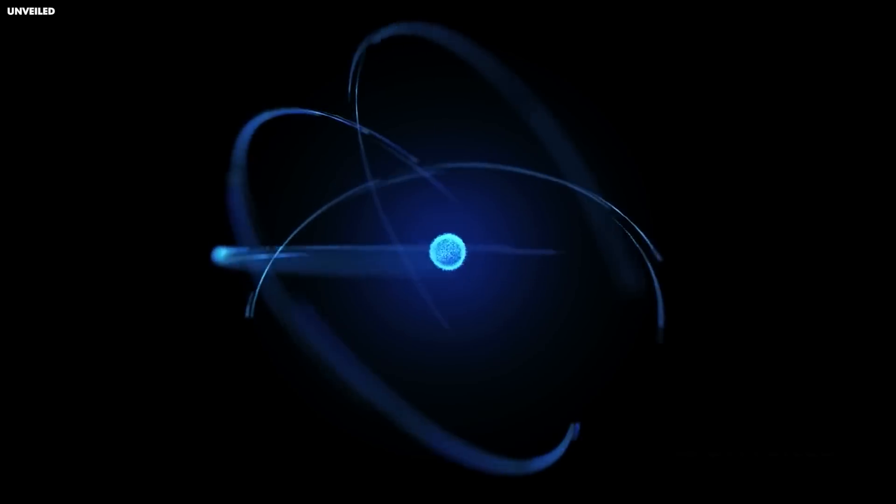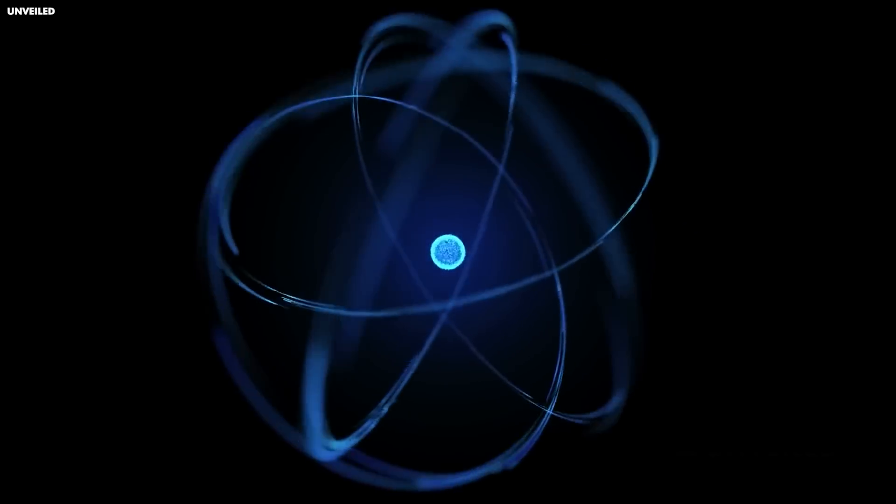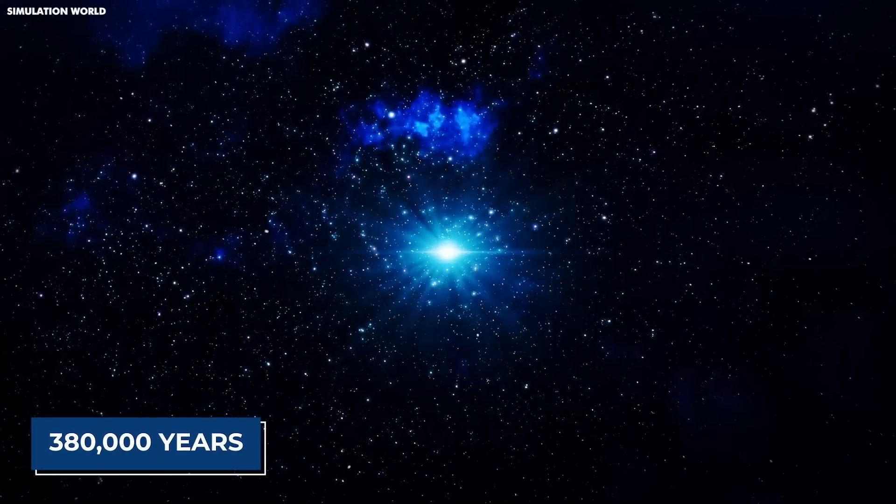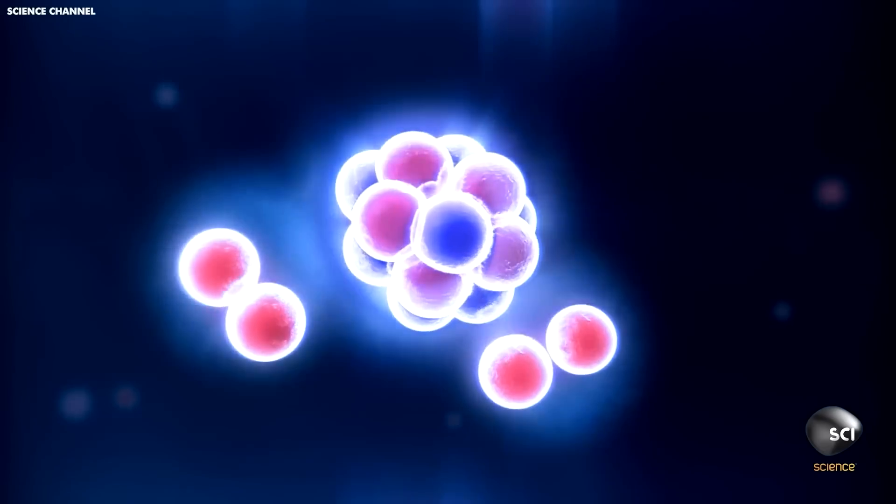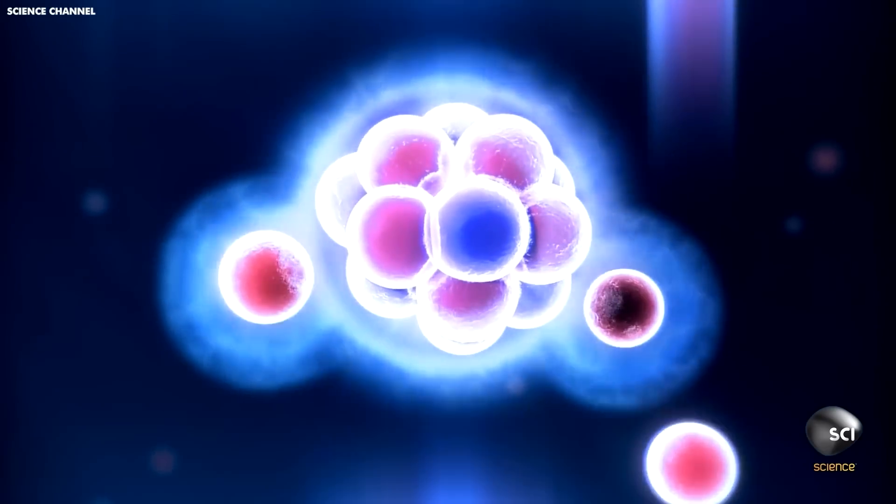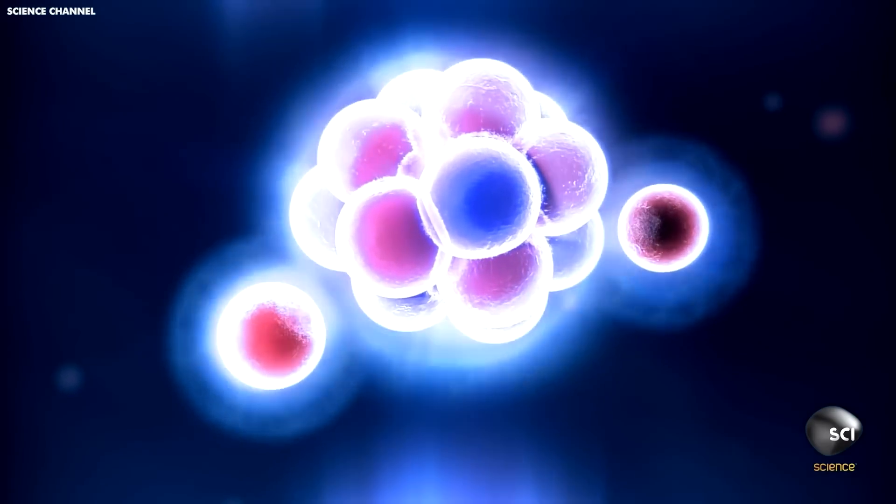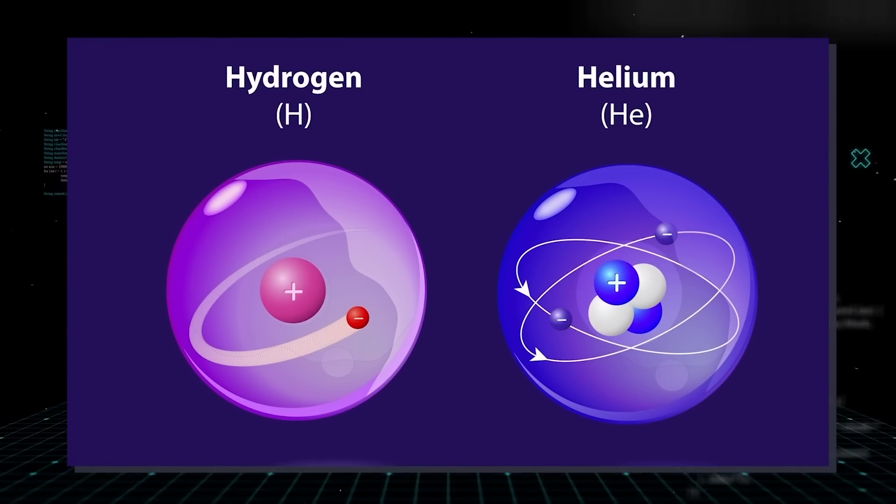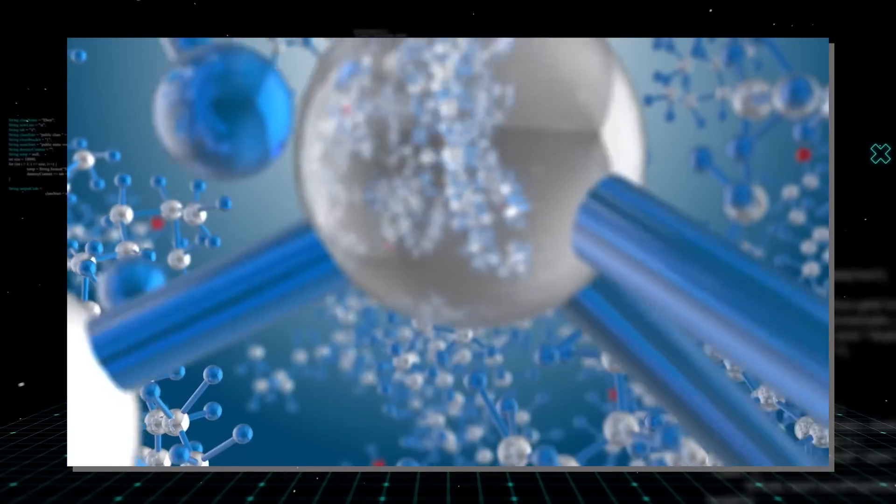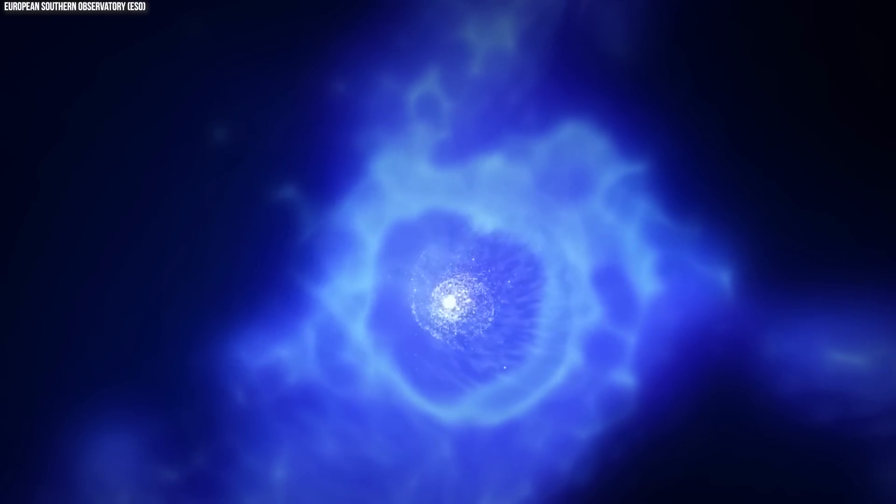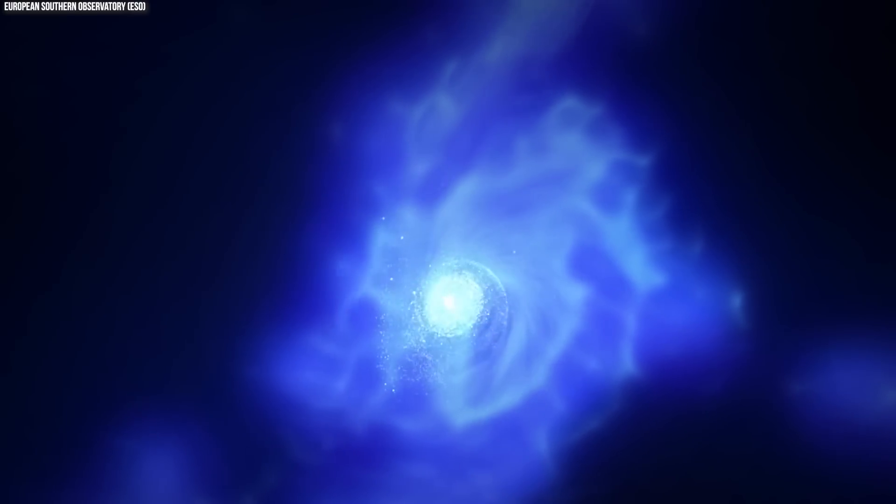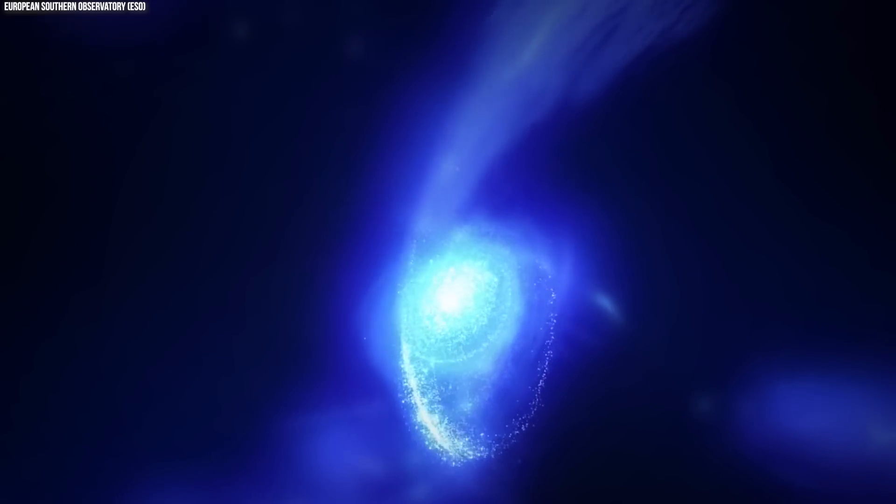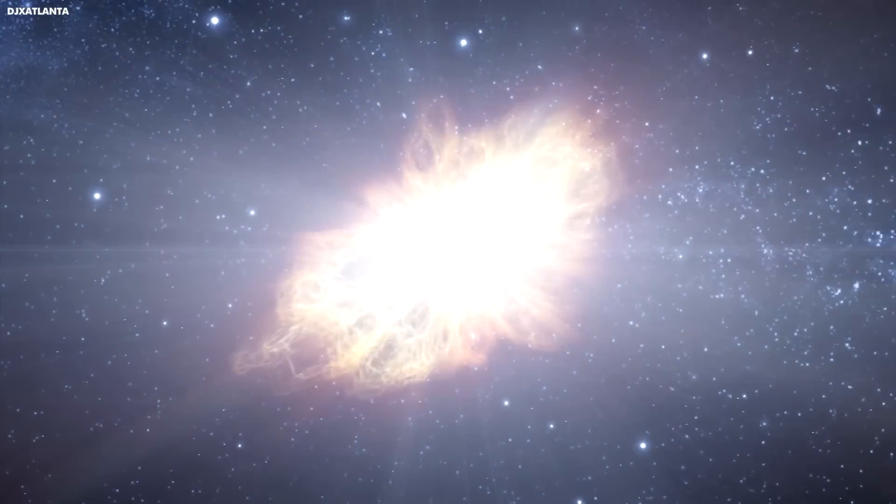But it would be a while before we had the first atoms. It took 380,000 years for the universe to cool enough for electrons to slow down enough for the nuclei to capture them, thus forming the first atoms. The first atoms were primarily hydrogen and helium, which is still the most abundant elements. Gravity eventually caused clouds of gas to coalesce and form stars, and heavier atoms were, and still are, created within the stars and ejected into space when the star explodes as a supernova.